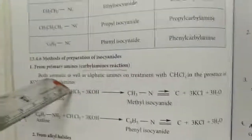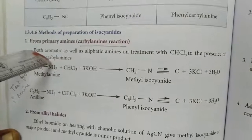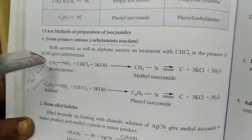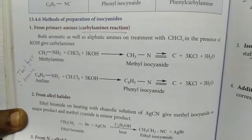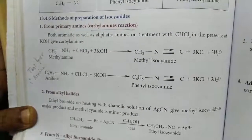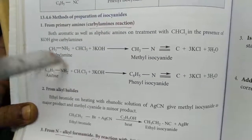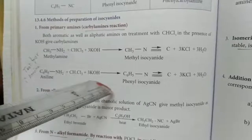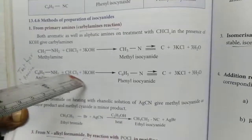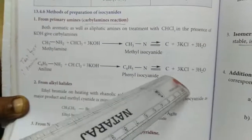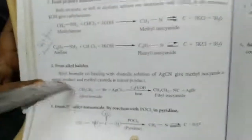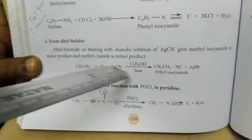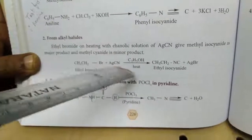Methods of preparation of isocyanide. First: by the carbylamine reaction — this is a test used to differentiate primary, secondary, and tertiary amines. Only primary amines react. When methylamine is treated with chloroform and potassium hydroxide (KOH), methyl isocyanide is formed. When aniline is treated with chloroform and KOH, phenyl isocyanide is formed. Second method: from alkyl halide with silver cyanide in the presence of ethanol and heat — AgBr is eliminated and the isocyanide group is formed.